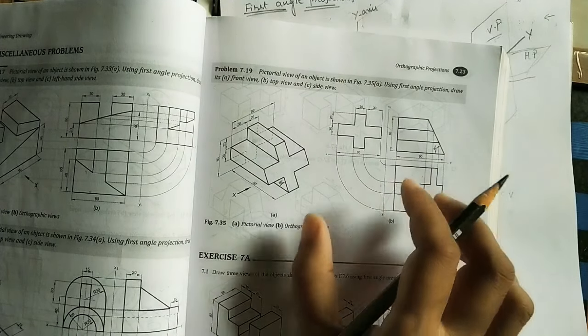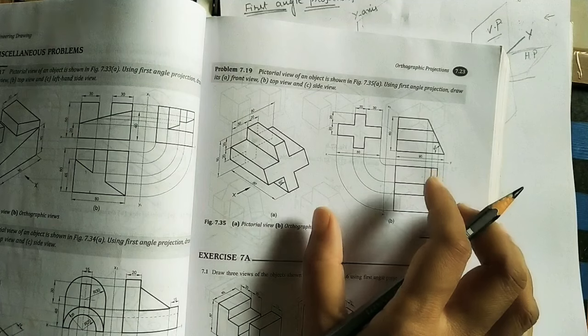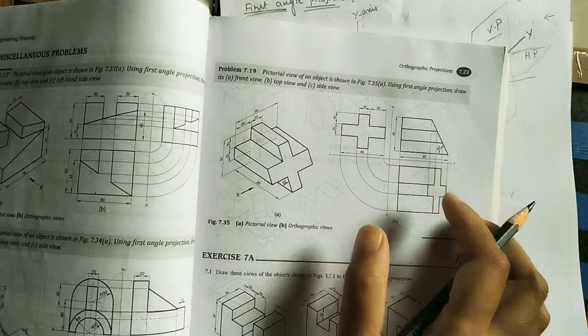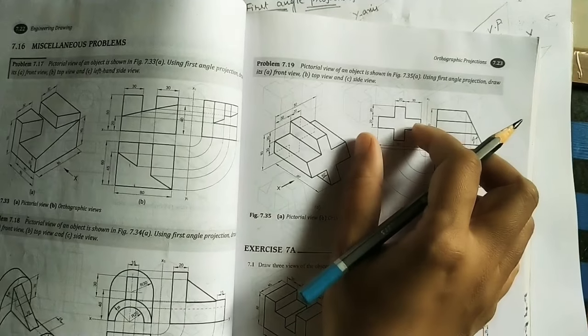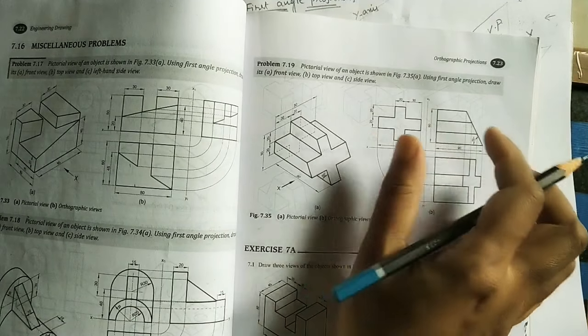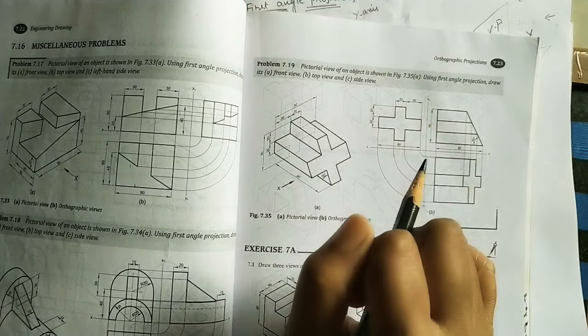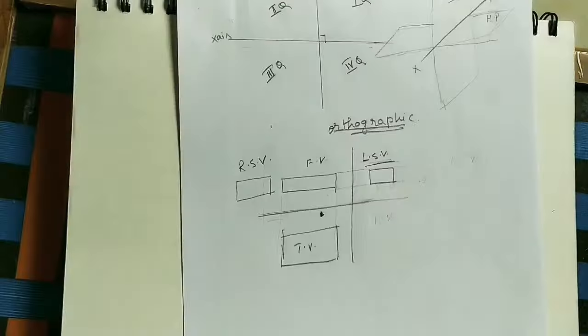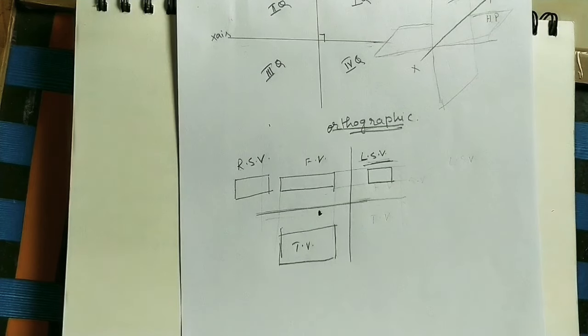The right side view is drawn on the left side of the diagram. In the next class, we will see what is third angle projection.